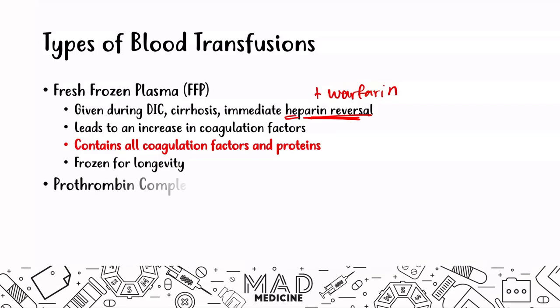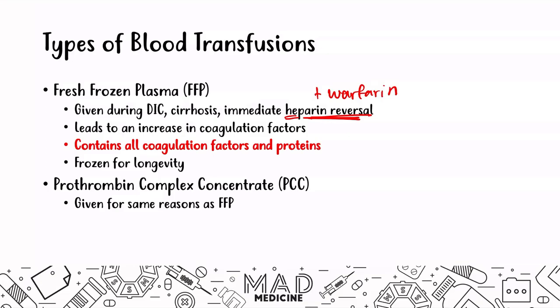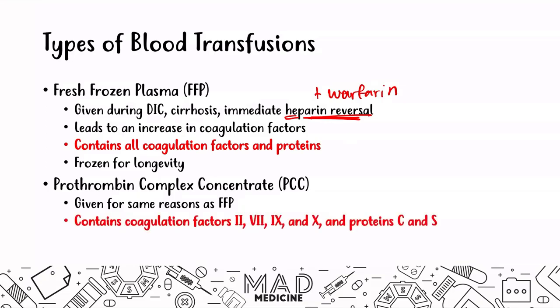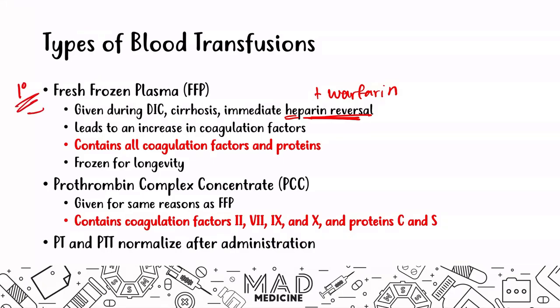The next type is prothrombin complex concentrate, PCC. It is given for the same reasons as FFP — DIC, cirrhosis, and reversal of heparin or warfarin overdose — but it specifically contains coagulation factors 2, 7, 9, 10, protein C, and protein S. After administration, you will see PT and PTT normalize. PCC provides both PT- and PTT-tested coagulation factors along with proteins C and S. FFP and PCC are your primary go-to answers for Step 1 when dealing with DIC, cirrhosis, or drug reversal.